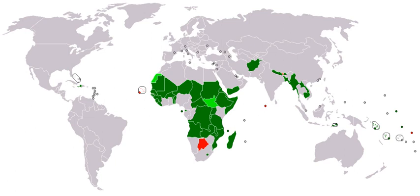Water pollution is a major problem in many developing countries. It has been suggested that water pollution is the leading worldwide cause of death and diseases, accounting for the deaths of more than 14,000 people daily. India and China are two countries with high levels of water pollution — an estimated 580 people in India die of water pollution-related illness every day, and about 90% of the water in the cities of China is polluted. As of 2007, half a billion Chinese had no access to safe drinking water.